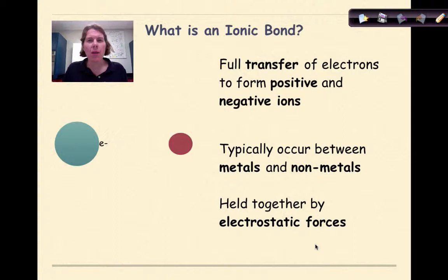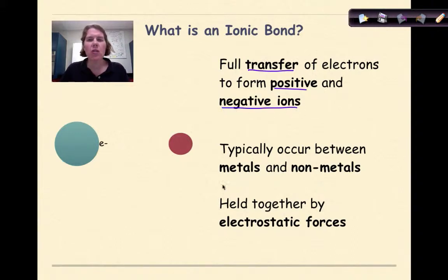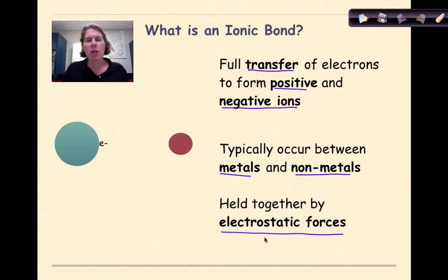So what is an ionic bond? Ionic bonding is the full transfer of electrons to form positive and negative ions. Typically in this course we're going to see it happening between metals and non-metals, and they're held together by electrostatic forces. An electrostatic force is just that positive-negative force of attraction that holds an ionic compound together.